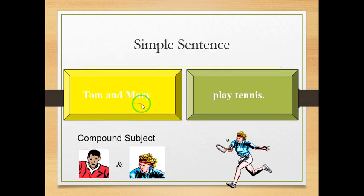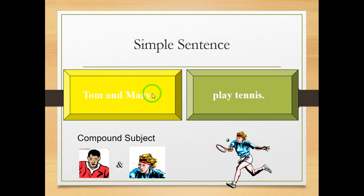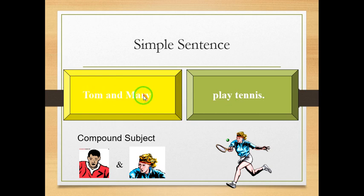Tom and Mary play tennis. Play is the verb, so we draw a slash before play. Tom and Mary is the complete subject. But here, we don't have one simple subject — we have two: Tom and Mary. Because we have two simple subjects, they make a compound subject.